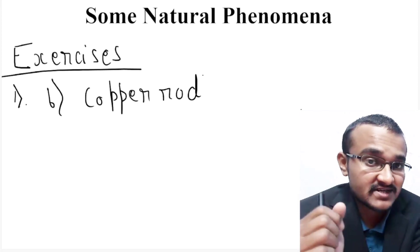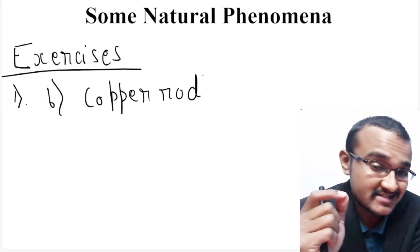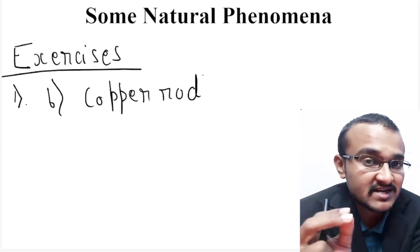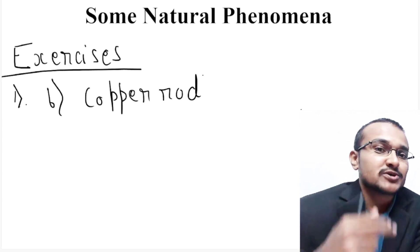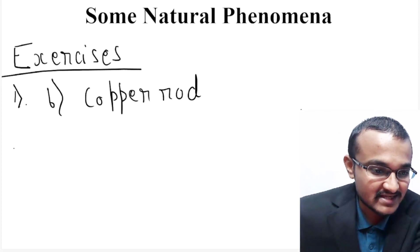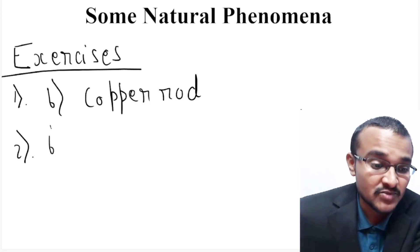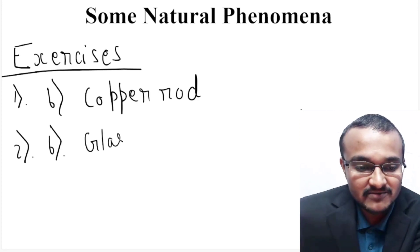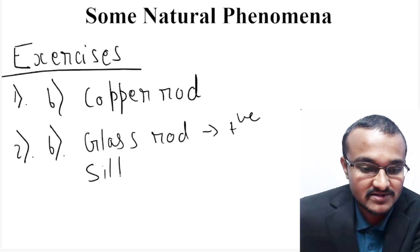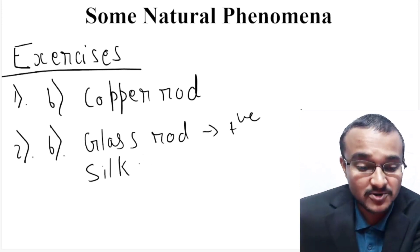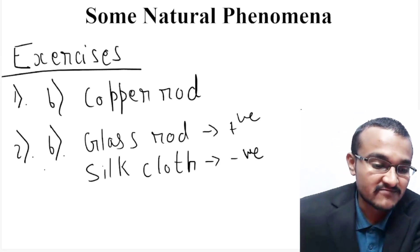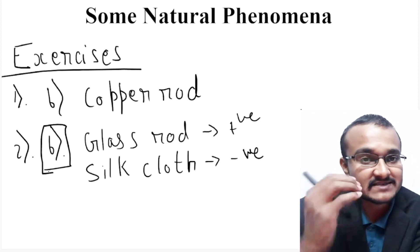Coming to the second question, they have given: when a glass rod is rubbed with a silk cloth, what happens? The glass rod becomes positively charged and the cloth loses its positive charges to the glass rod; hence the cloth becomes negatively charged. So the correct option for this second question will be option B, where the glass rod will be positively charged and the silk cloth will get negatively charged.